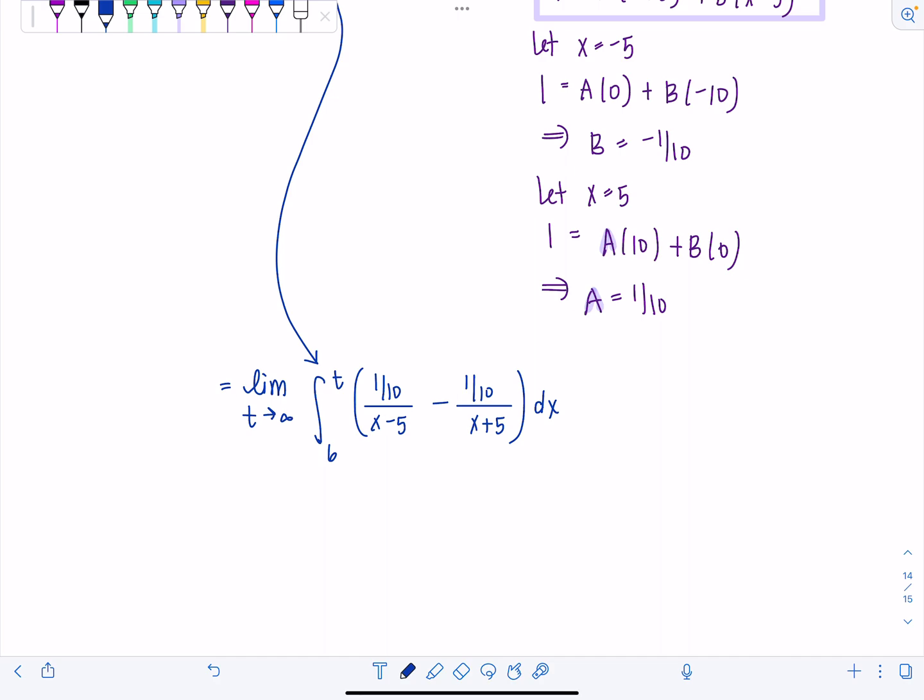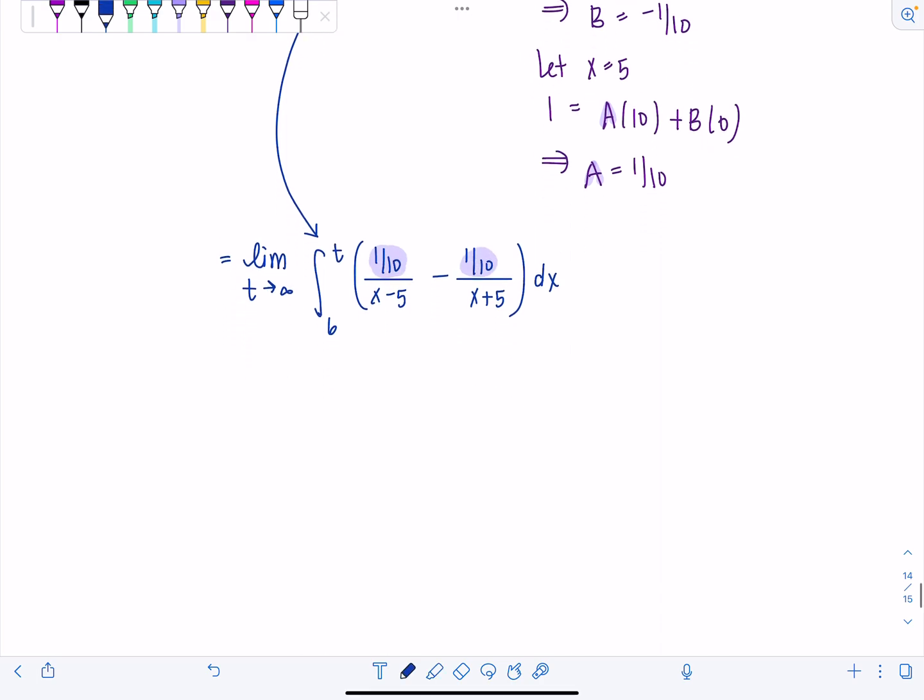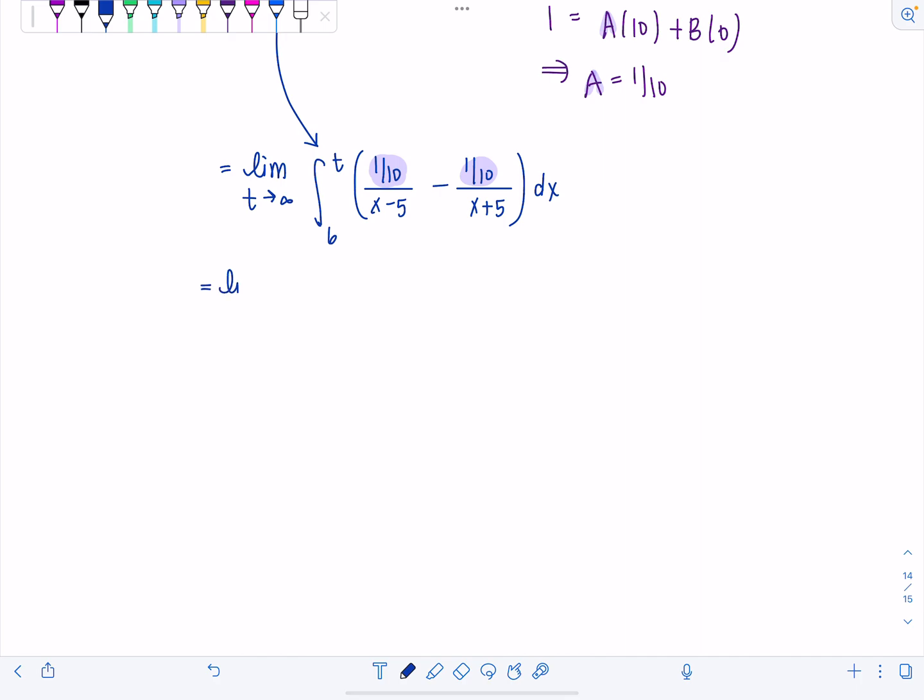Why don't we go ahead and just factor out this 1 tenth from the integral. It'll make things nicer to work with. So we've got limit t approaches infinity, 1 tenth times the integral from 6 to t, 1 over x minus 5 minus 1 over x plus 5 dx. Fabulous.